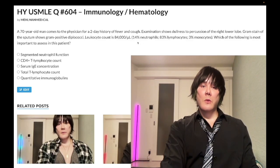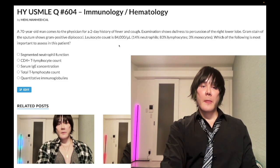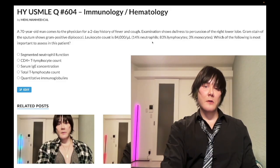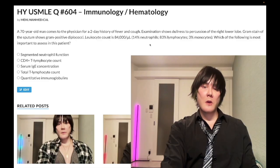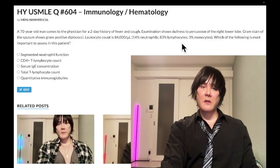The differential shows 14% neutrophils, 83% lymphocytes, and 3% monocytes. The question wants to know what's most important to assess in this patient. Something is clearly awry — in a bacterial infection we should have a neutrophilic shift, with neutrophils at 50–60% or higher, maybe 70–80% in a bacterial infection. Yet here we have almost all lymphocytes.